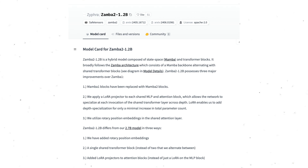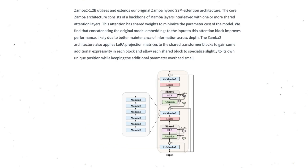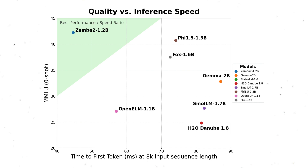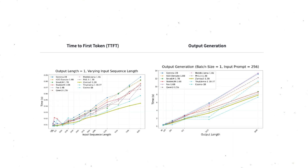The next one is called Zephyra — a 1.2 billion parameter model. This is a hybrid state space model, meaning it's not a pure transformer — it's a combination of the Mamba world and the transformer world. According to the authors, it outperforms a lot of existing models in the same parameter range, beating Gemma 2B from Google and Phi-1.5 from Microsoft. It uses Mamba 2 and LoRA projectors for improved attention. Definitely worth looking into if you're interested in alternative architectures.